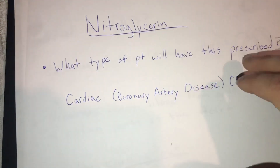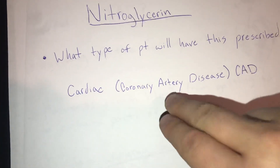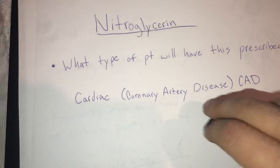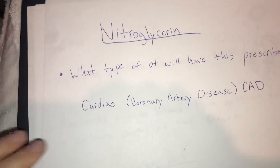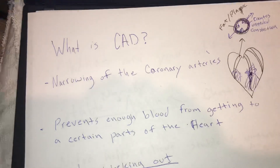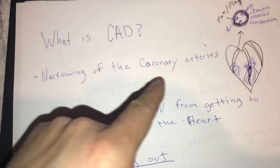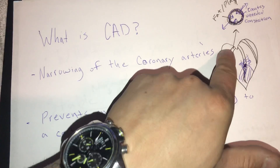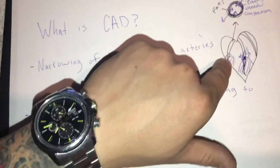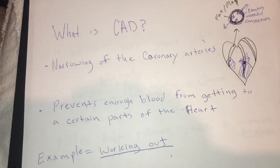What type of patient will be prescribed nitroglycerin? It's going to be a cardiac patient in general, but specifically if a patient has a history of coronary artery disease, also known as CAD, this patient will have nitroglycerin prescribed to them. In order to know why they have it prescribed, we need to know what CAD is. It's a narrowing of the coronary arteries — vessels that wrap around the top of the heart and feed the heart itself with blood so it can receive oxygen to pump and stay alive.